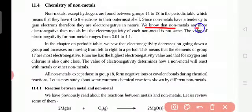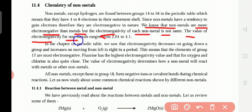We know that non-metals are more electronegative than metals, but the electronegativity of each non-metal is not same. The value of electronegativity for non-metals ranges from 2.01 to 4.1. In the chapter on periodic table, we saw that electronegativity decreases on going down a group and increases on moving left to right in a period.